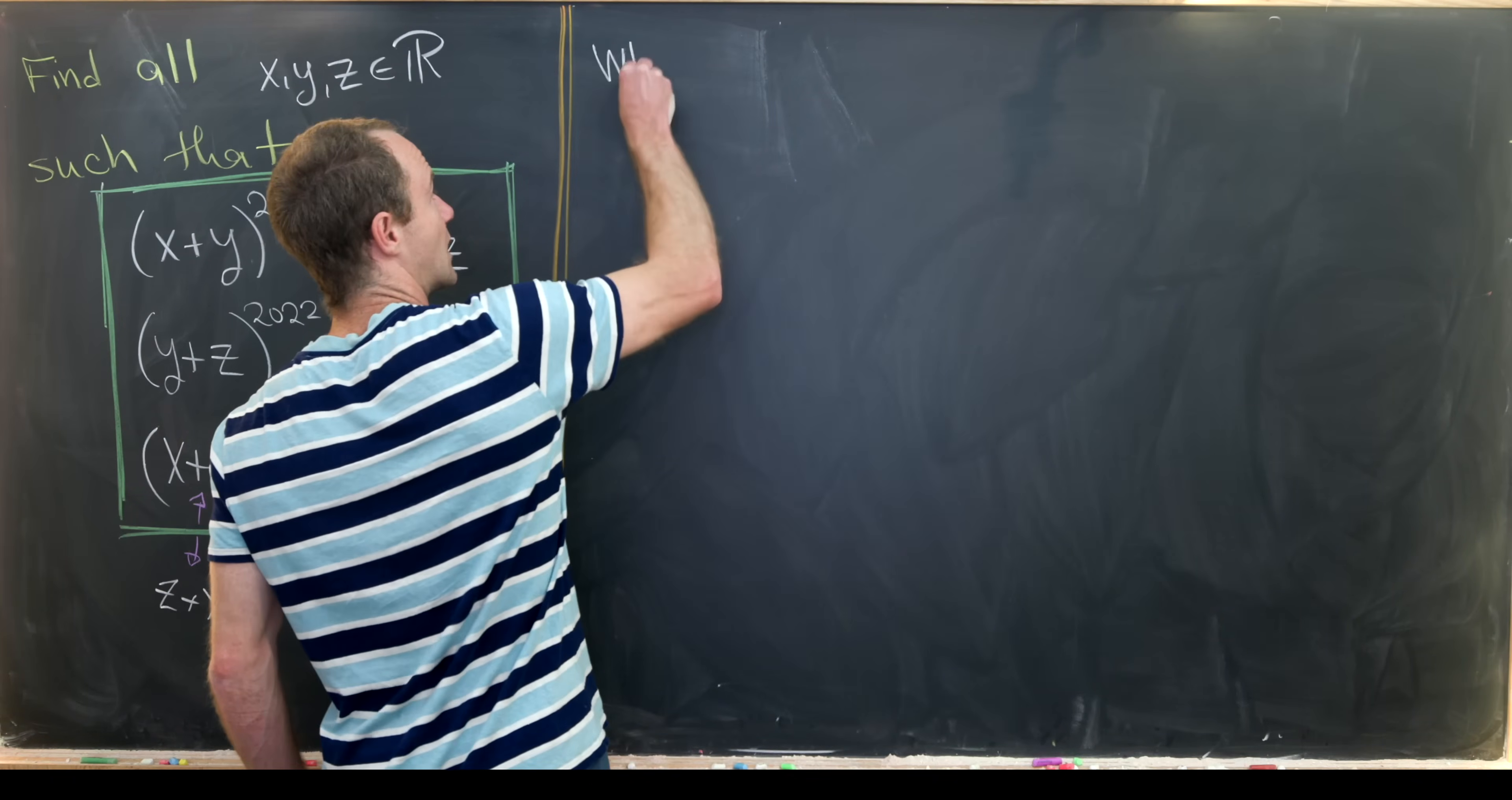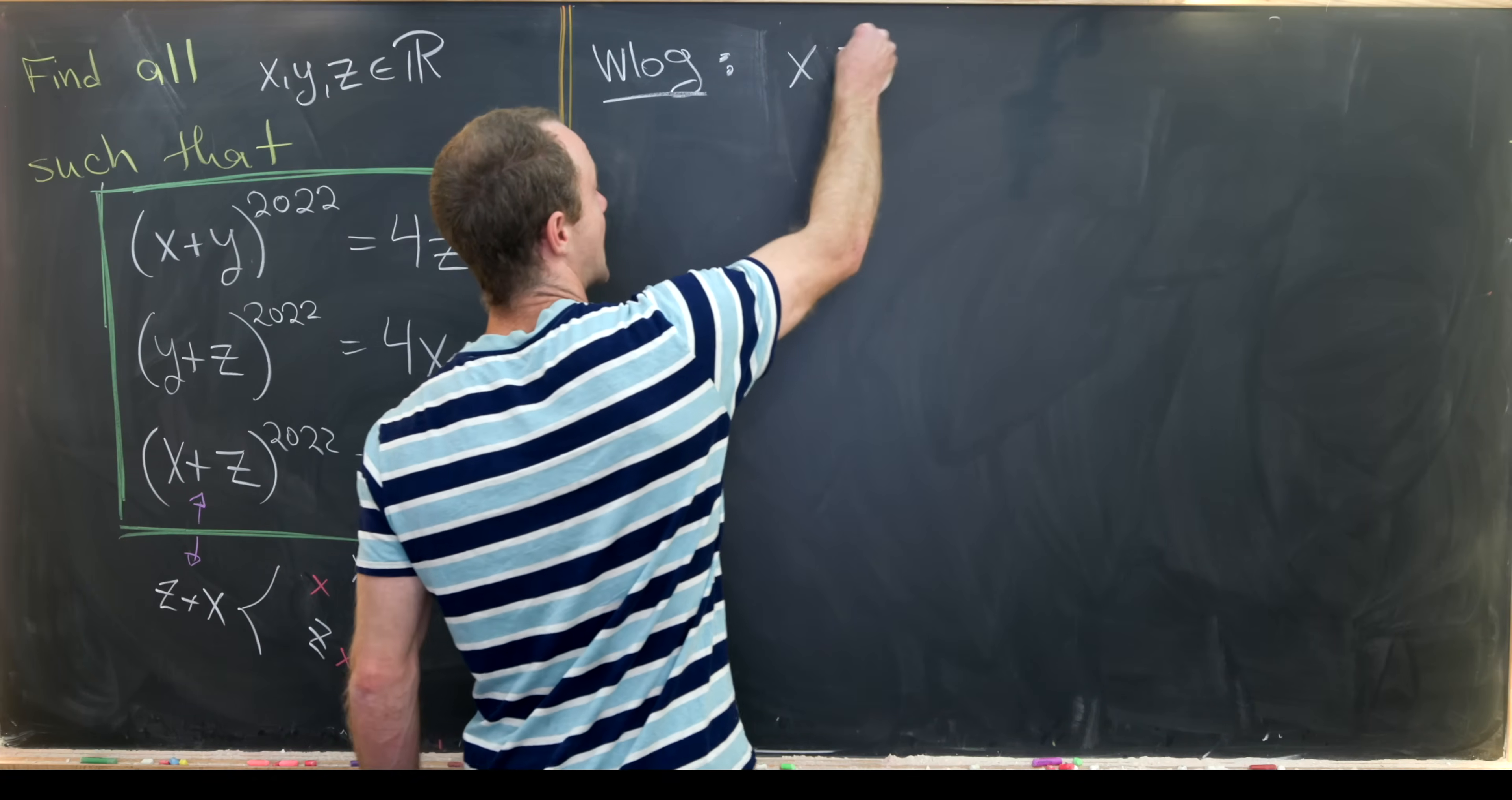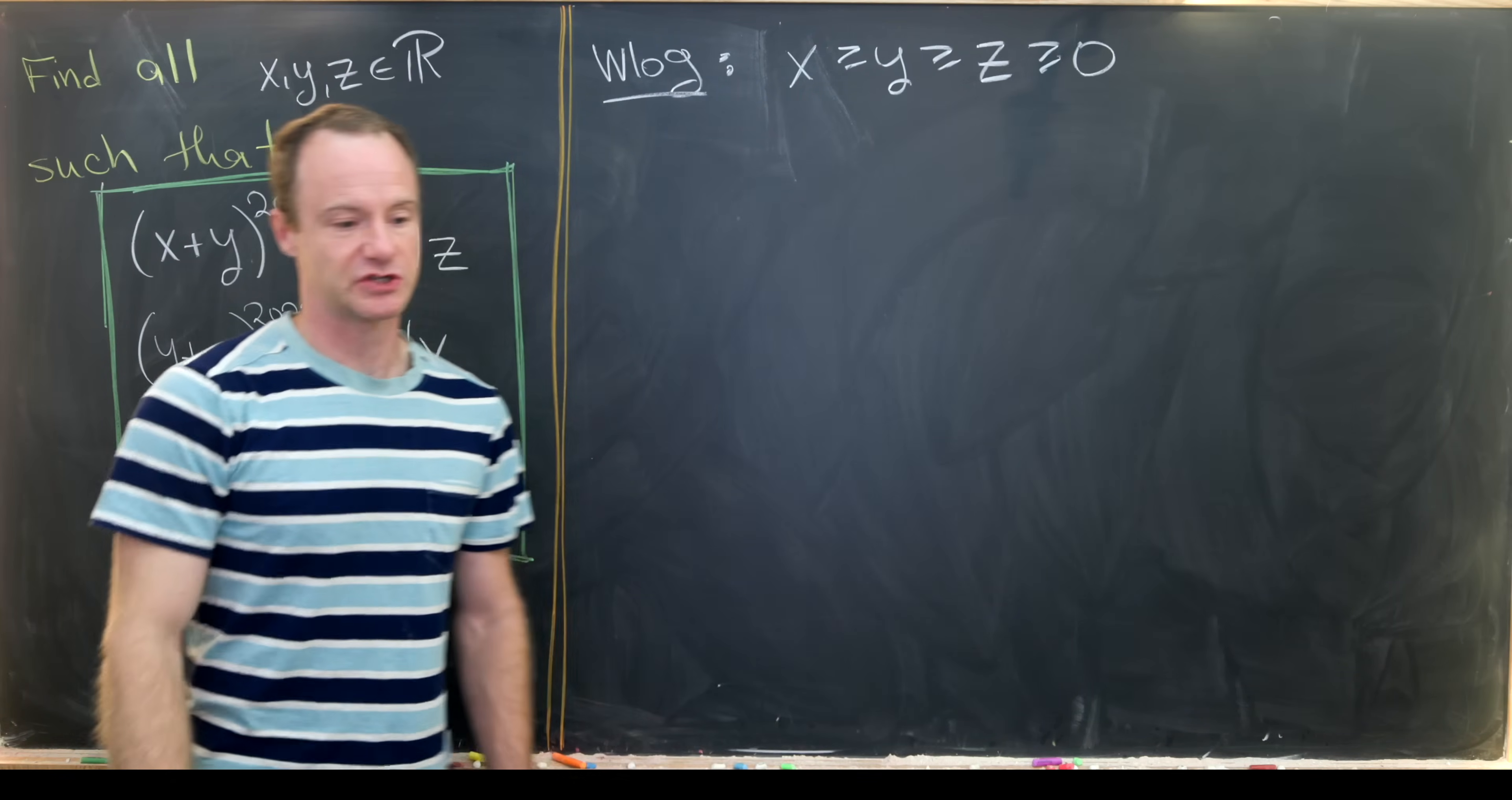Furthermore, since we've got symmetry in our variables, we can assume that we have an ordering on those variables, and then we can pick up all permutations of the solutions that we find. So anyway, without loss of generality, we might as well assume that x ≥ y ≥ z ≥ 0.